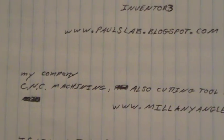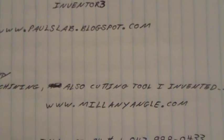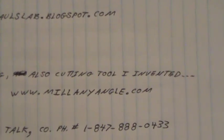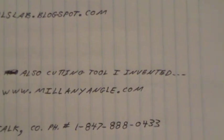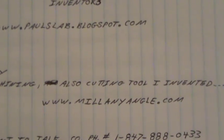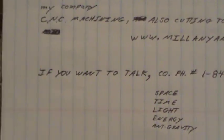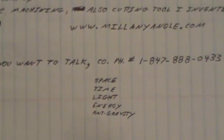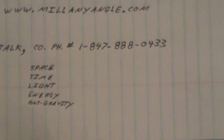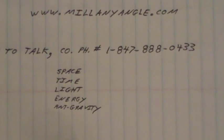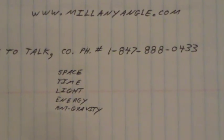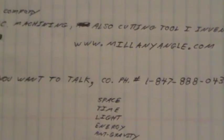Here's my company, CNC machining, that's what we do. All kinds of machining, actually. Also, a cutting tool I invented is at this location, www.millanyangle.com. If you want to talk, here's the company phone number, I enjoy talking about space and time and life especially, energy, anti-gravity, whatever you want.